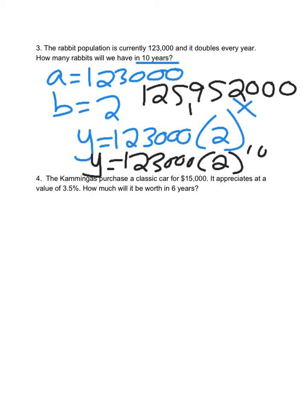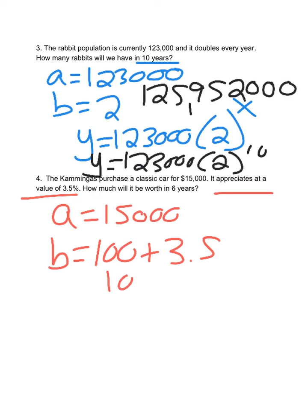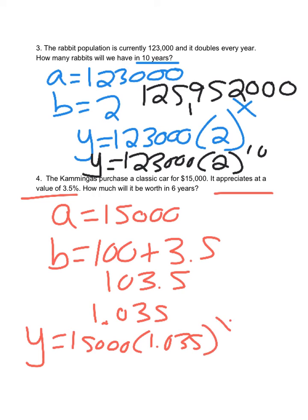Final example. We purchased a classic car for $15,000. That would be A. It appreciates at a value of 3.5%. B equals 100 plus 3.5, so that would be 103.5. Then you're going to change this to a decimal divided by 100, so you have 1.035. I have Y equals 15,000 times 1.035 to the X.